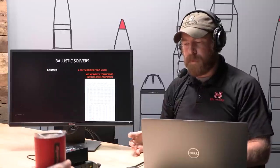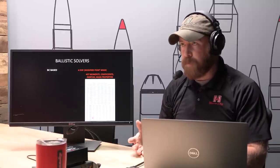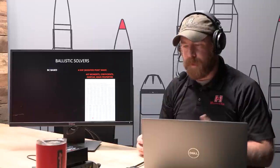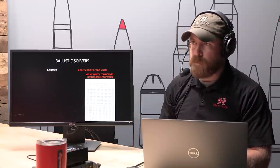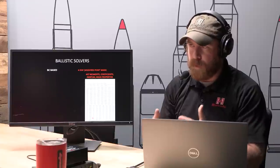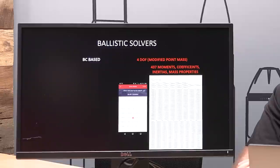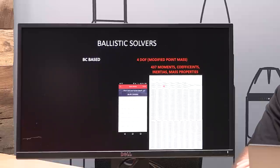Once we have all those things, they get brought together into the Hornady Fordhoff bullet file. That's the Doppler radar drag curves, all of the aerodynamic moments and coefficients, inertial properties, and mass properties of that bullet — all paired together. When you load a bullet from the Fordhoff library and select it, this is the file that's selected and used for calculations. There are 437 unique values in every Fordhoff bullet file specific to that one bullet. That's remarkable.